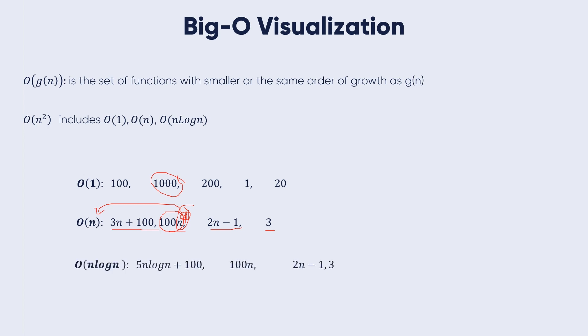Another example: O(n log n). 5n log n + 100 is the first term, the second term 100n, 2n - 1, and 3. Three is a constant, this is the least one.